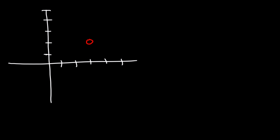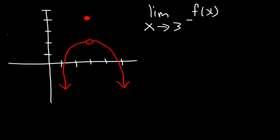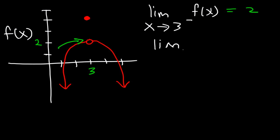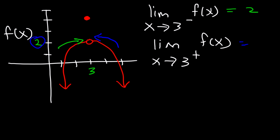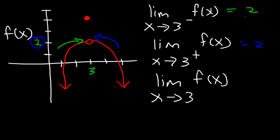Let's try another example. Say we have an open circle at one point and a closed circle here. What is the limit as x approaches positive 3 from the left side? Here is an x value of 3 — as we approach from the left, the y value is 2. As we approach x equals 3 from the right side, the y value is still 2. Because these two values are the same, the limit exists and equals 2.